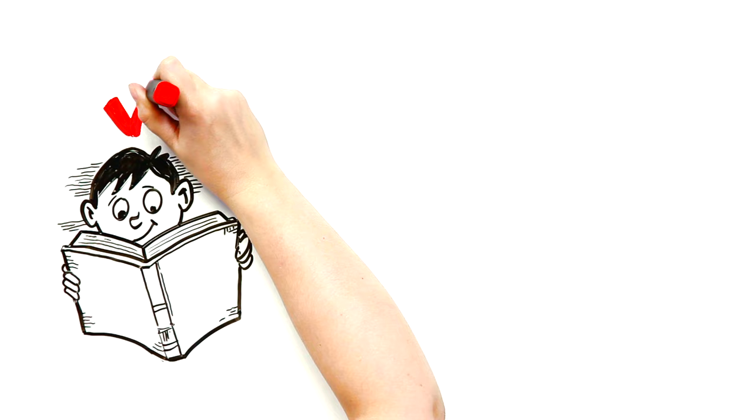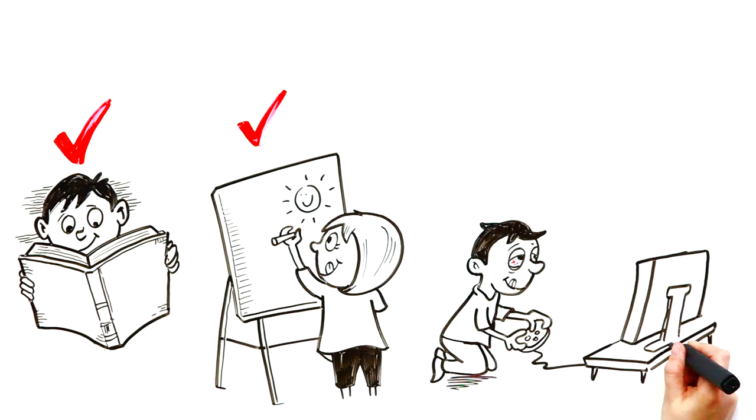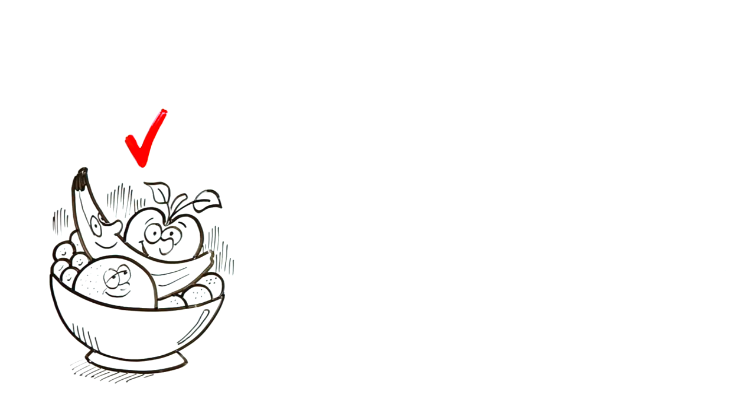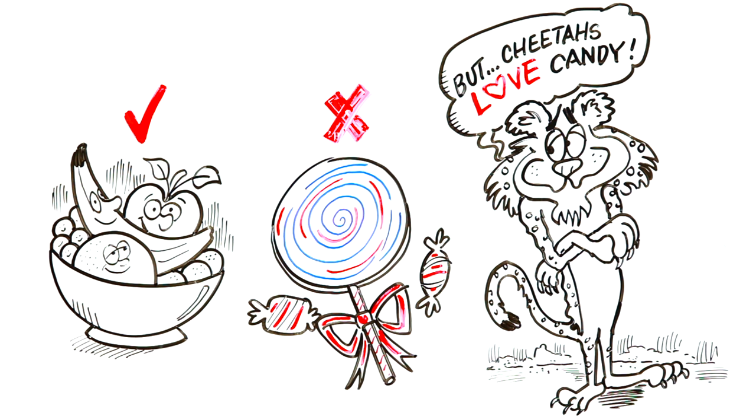If you learn the skills of health literacy, you might choose to do fun activities like read a book, go outside and be active, or draw instead of only playing video games. And you may choose to eat more fruits and vegetables instead of mostly candy. I know, Mr. Cheetah, but being healthy is just as important for cheetahs as it is for kids.